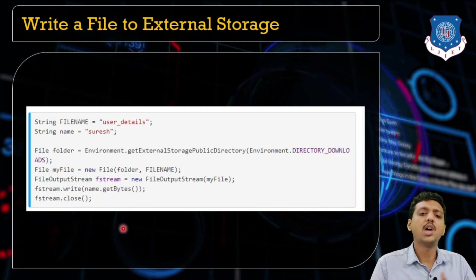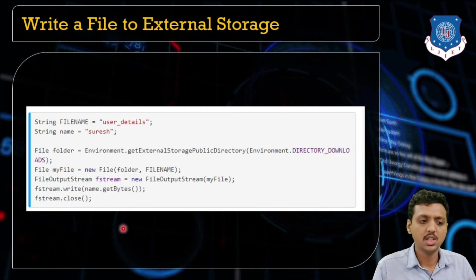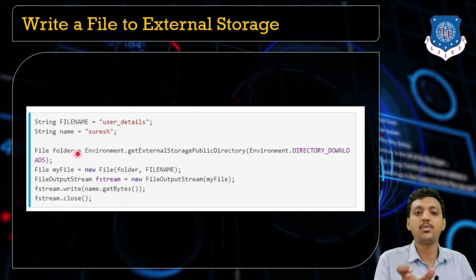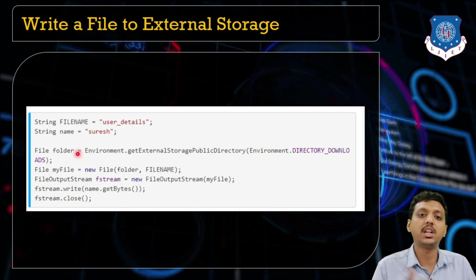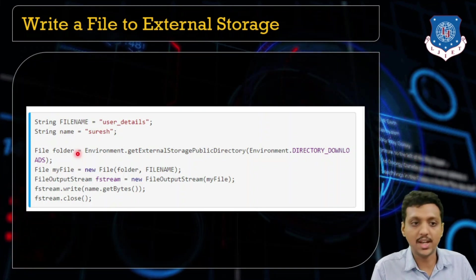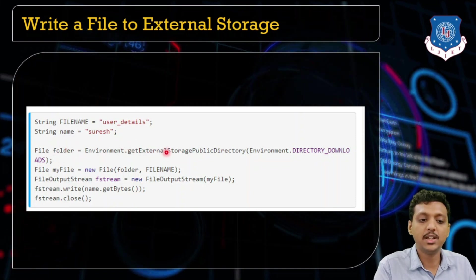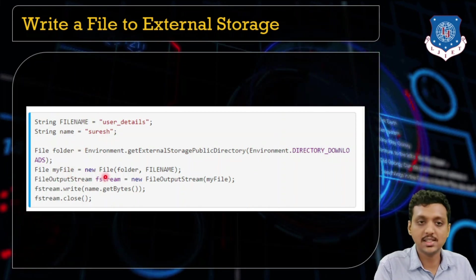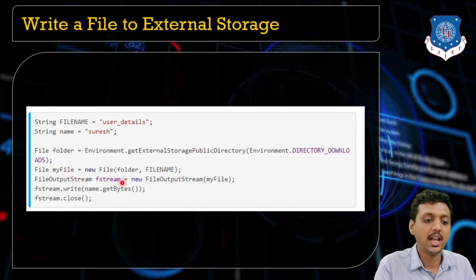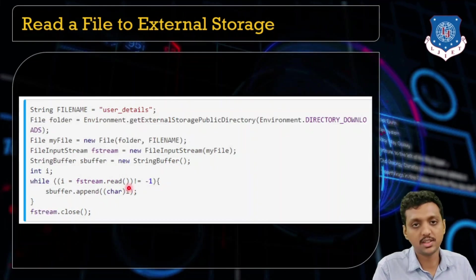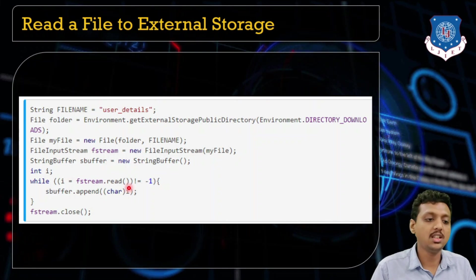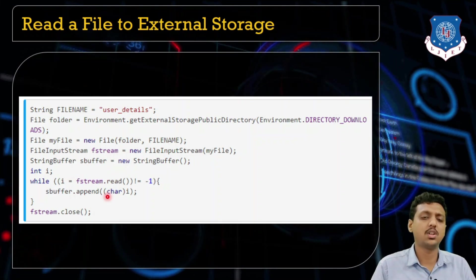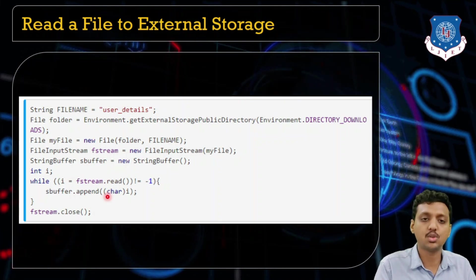Next, how to write to external file storage — same approach as before but before writing you need to create a directory for the application. In external storage we make a directory and inside it we put our file. The file folder uses Environment.getExternalStoragePublicDirectory() with a directory name. Then open the file, write the data, and close it. For reading, go to the directory, open the file, read it into a string buffer, and close the input stream.